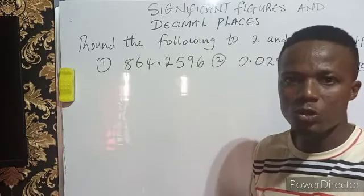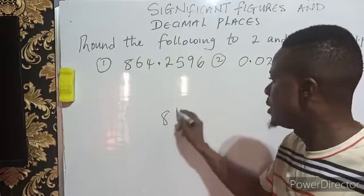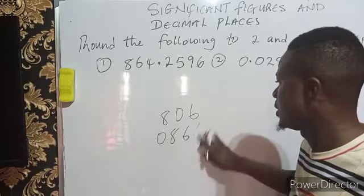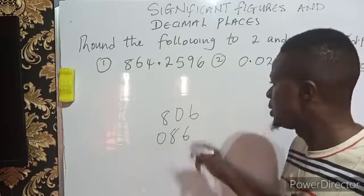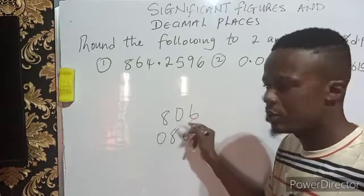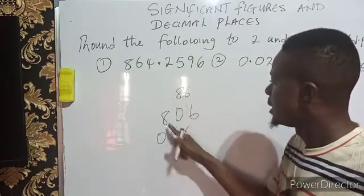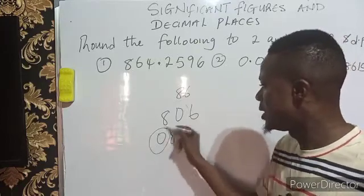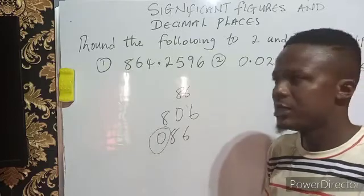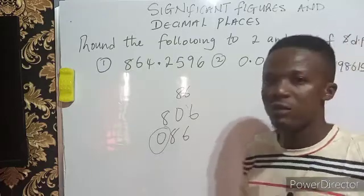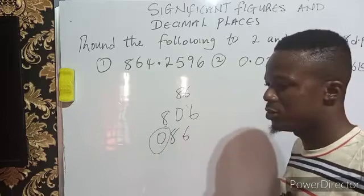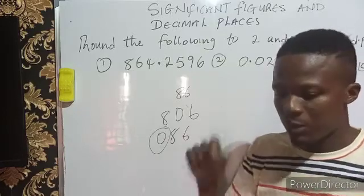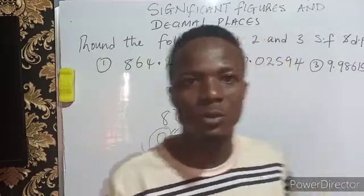Zero becomes significant when it comes in between two numbers. For example, if you have 806 and 086 — this zero in 806 is significant because if I remove this zero I'm getting 86, and 86 is different from 806. So zero is only insignificant when it begins a number. Hence, if you are trying to put a number to a given significant figure and the number starts with zero, you don't count them. But in decimal places, you start counting from the decimal point.